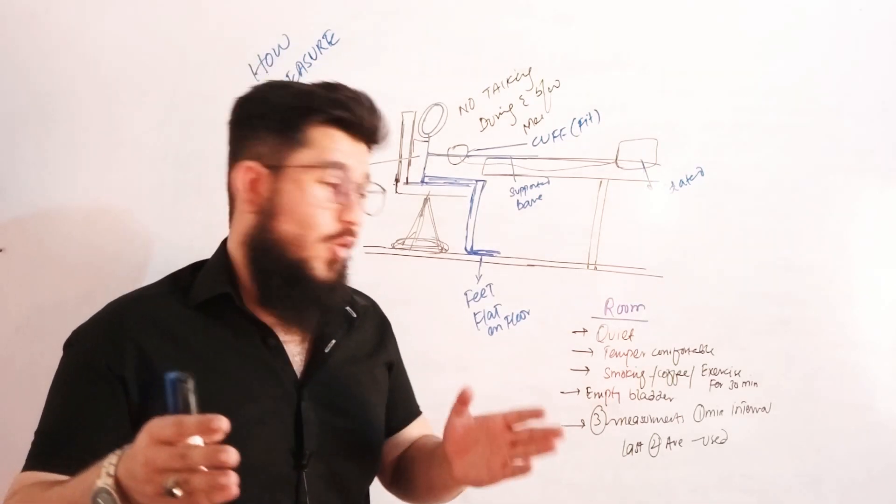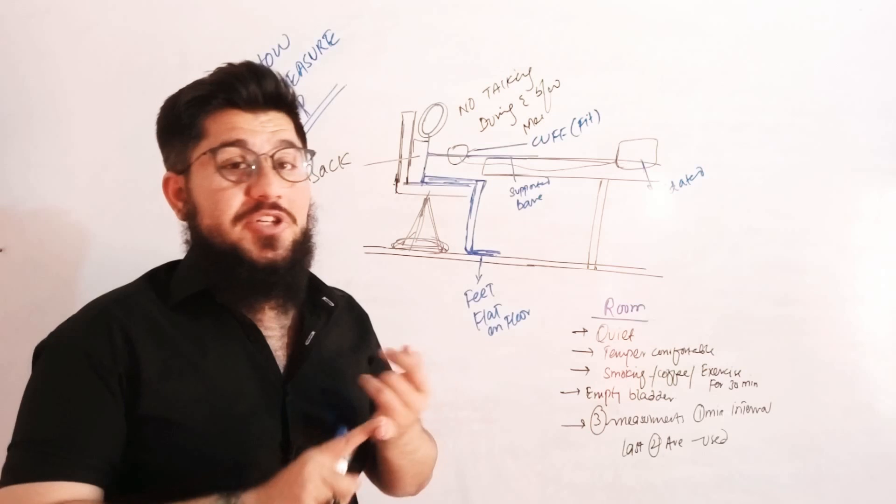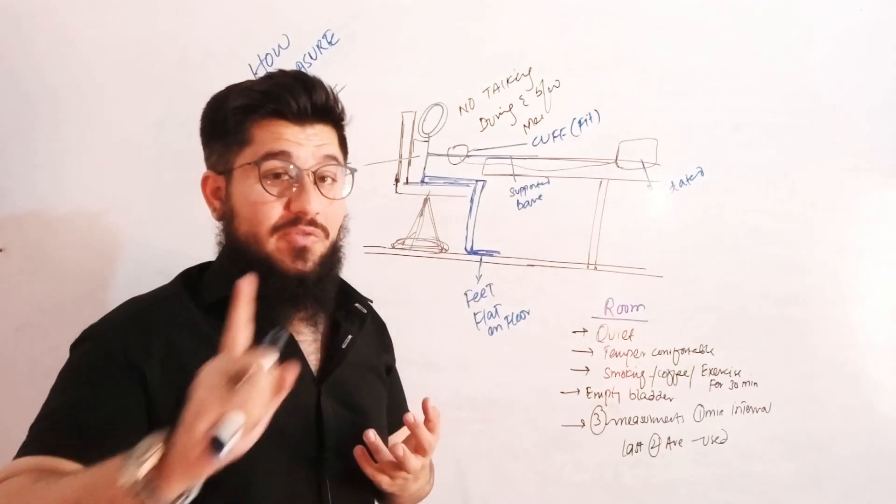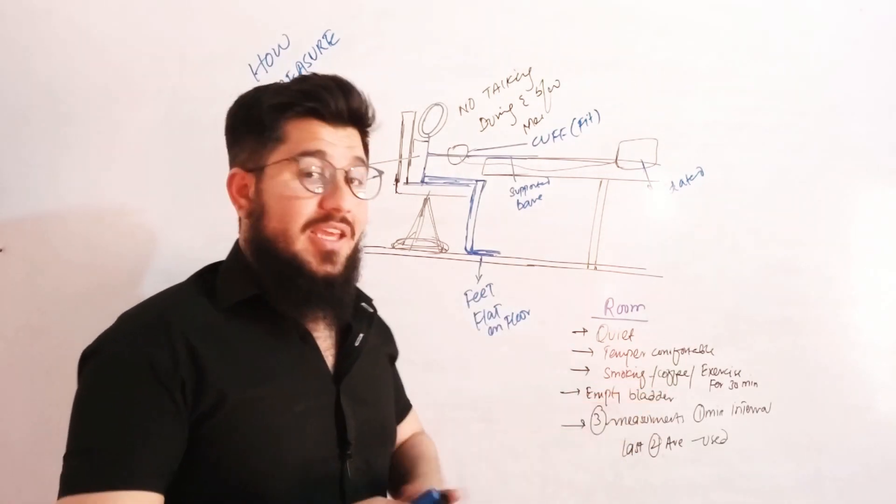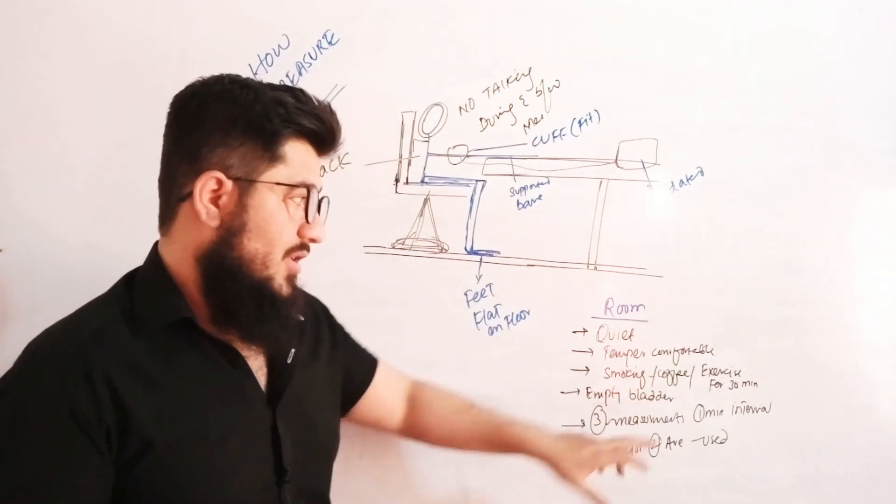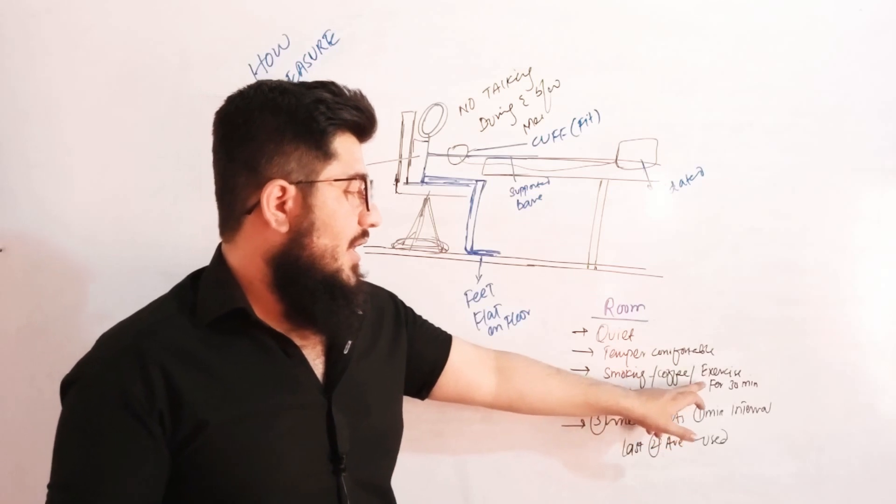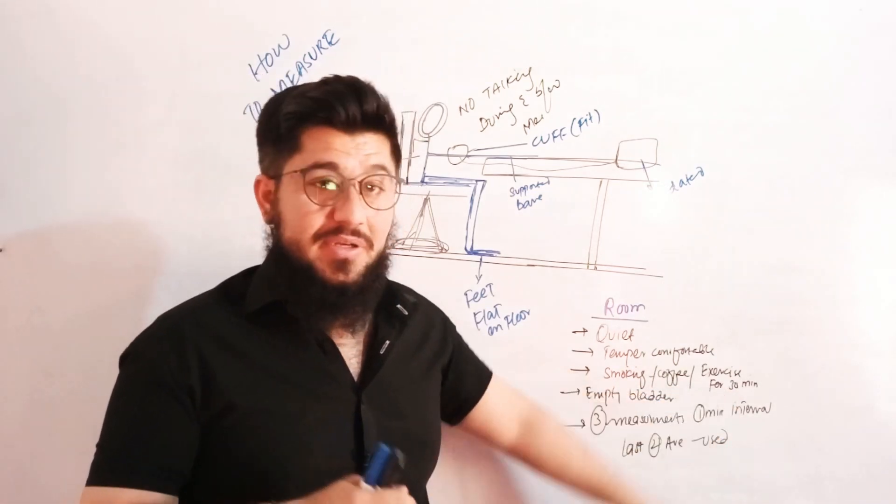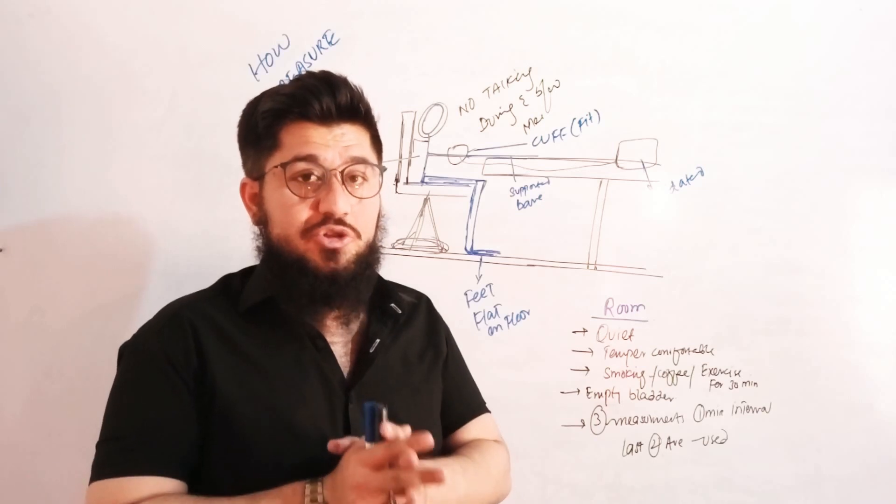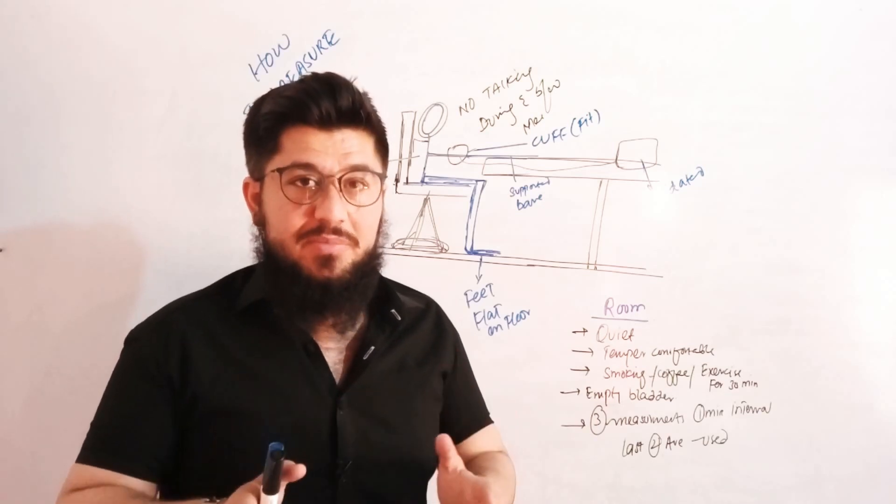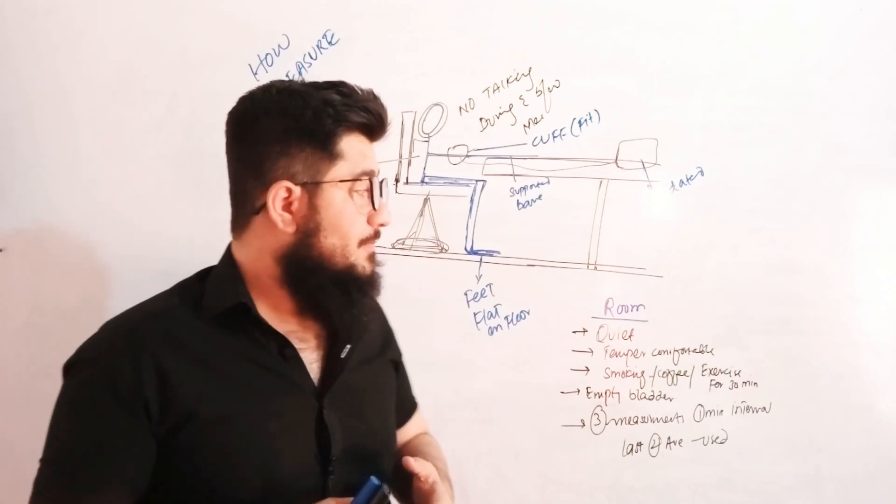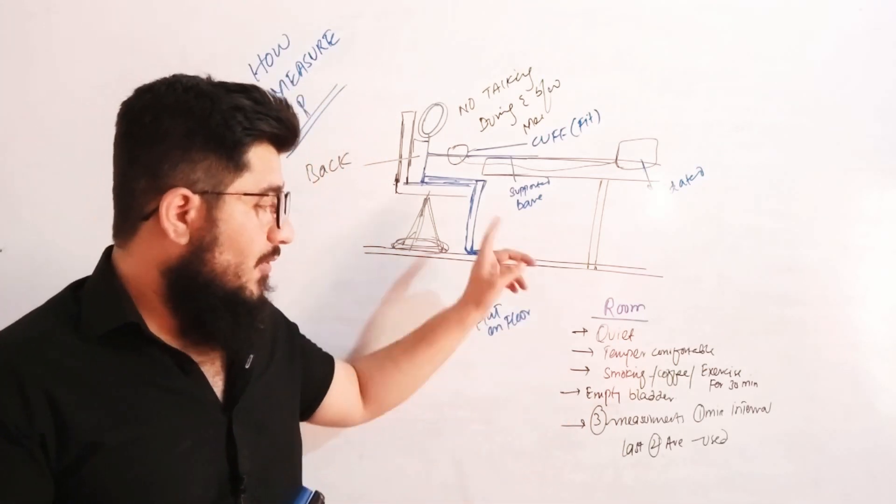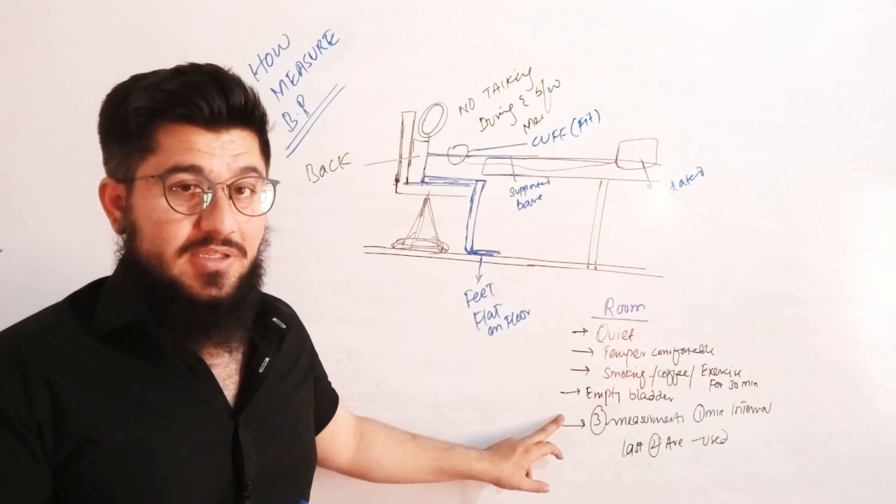The patient must not be smoking, and there should not be any smoke around. The patient must not be taking coffee, and exercise should be refrained from 30 minutes before measurement. A person should have rest for about 30 minutes before measurement. The bladder must be empty, and we will go for three measurements.